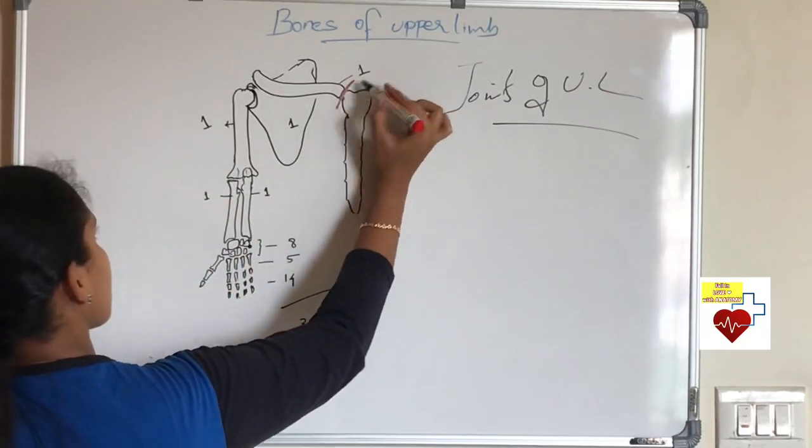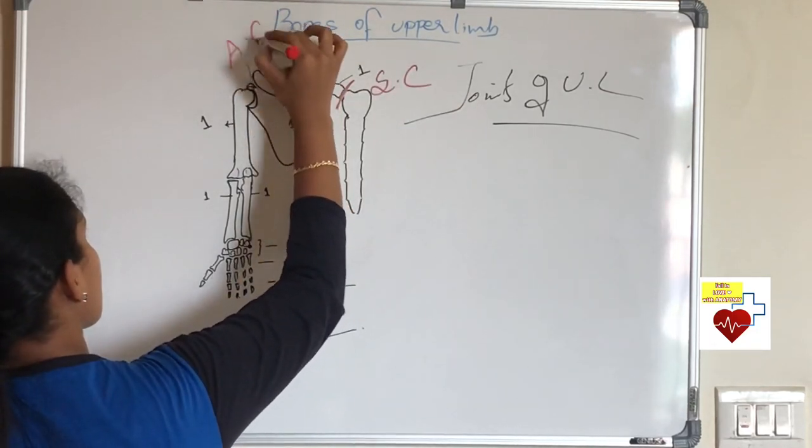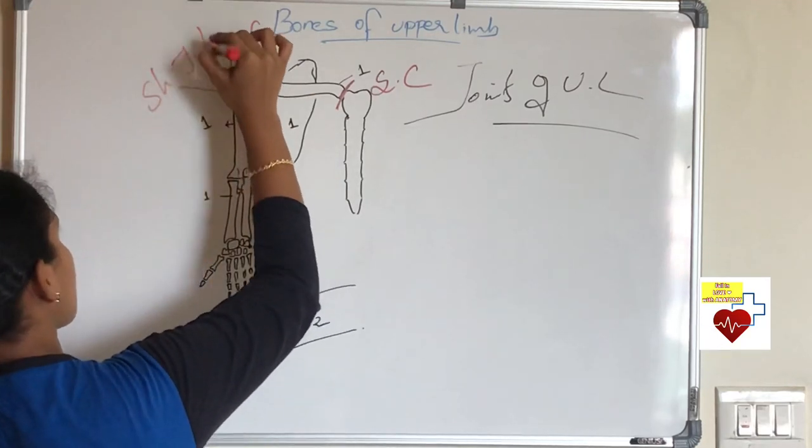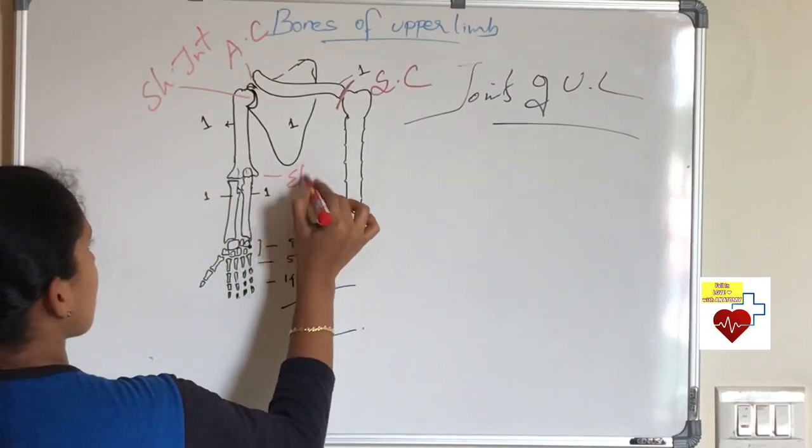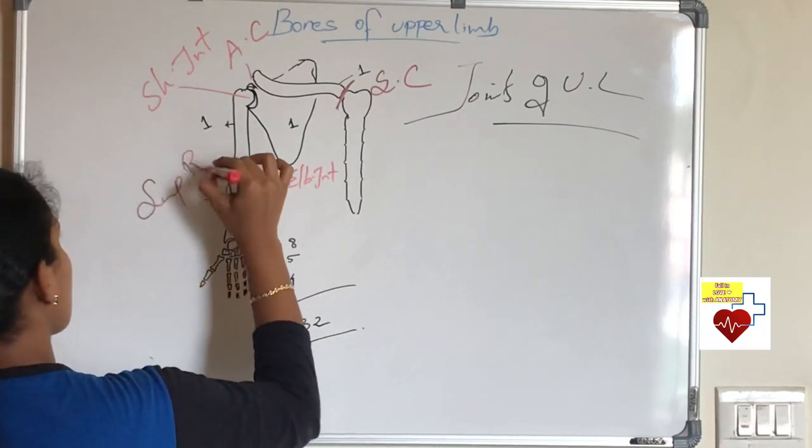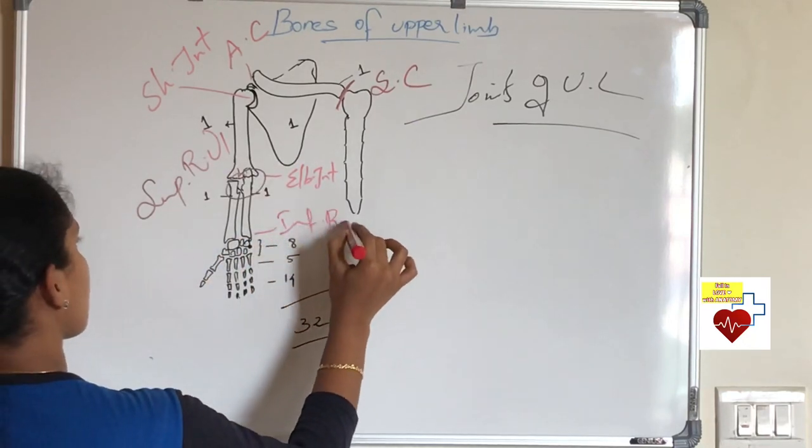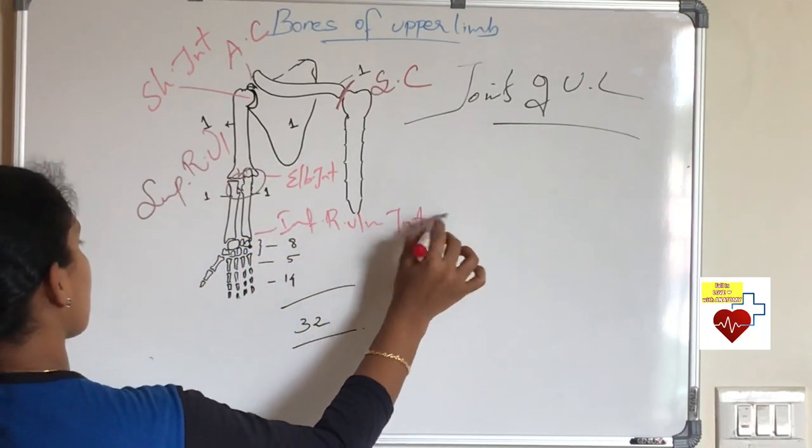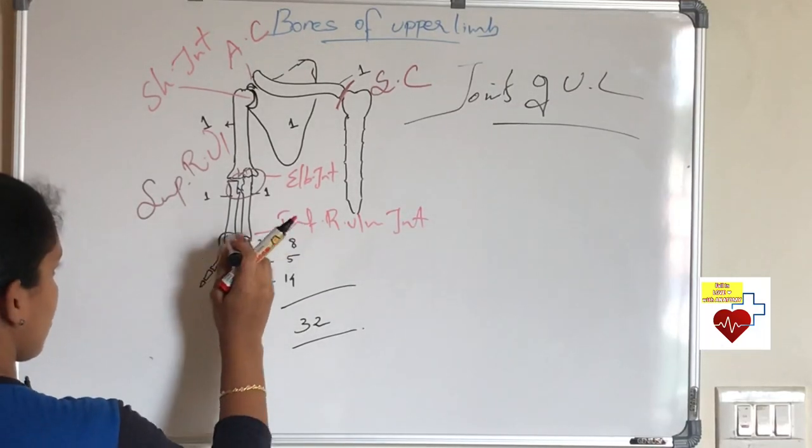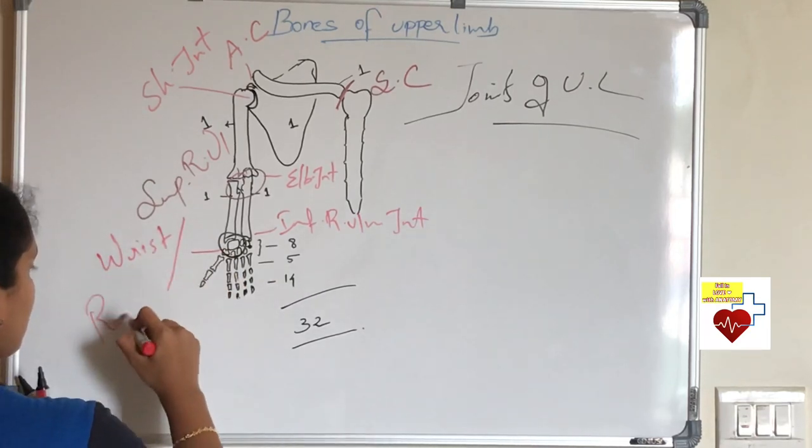Now joints of upper limb. Medial end of clavicle articulates with manubrium sterni to form sternoclavicular joint. Lateral end, acromioclavicular joint. Head of humerus with glenoid cavity, shoulder joint. Here you know elbow joint. Upper end of radius-ulna forms superior radioulnar joint. Likewise inferior radioulnar joint. Radius articulates with the carpal bones to form what joint? Wrist joint. You should know ulna does not take part in the formation of wrist joint.